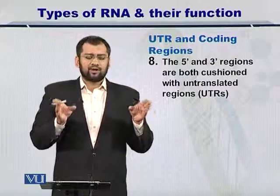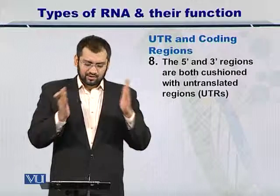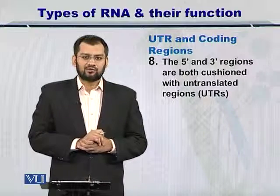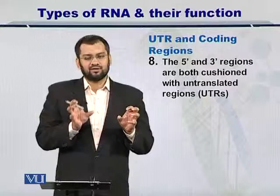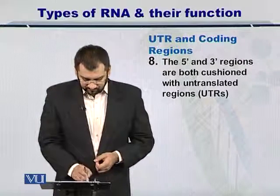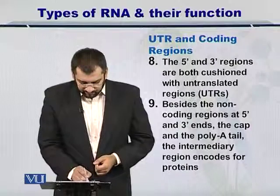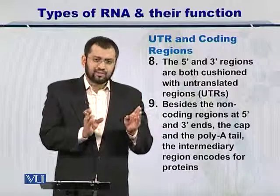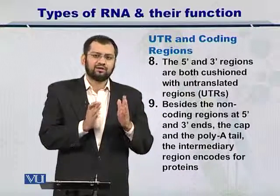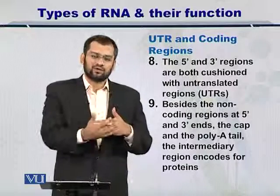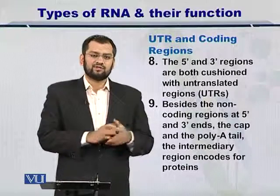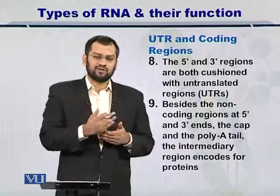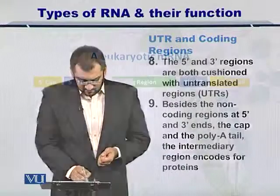At the five prime end and the three prime end there are these caps, and within these caps there are untranslated regions, simply called UTRs. They pad the five prime end and the three prime end together. The region that falls between the five prime end and the three prime end — along with the UTRs — is where the nucleotides code for protein. The information is very well protected, ensuring that the protein formed as a result of translation is consistently made.